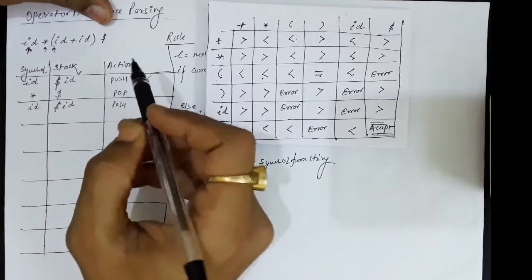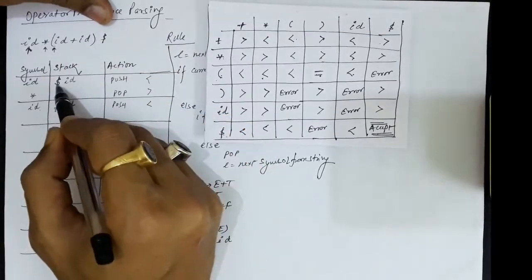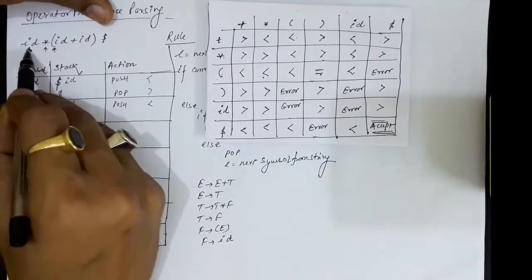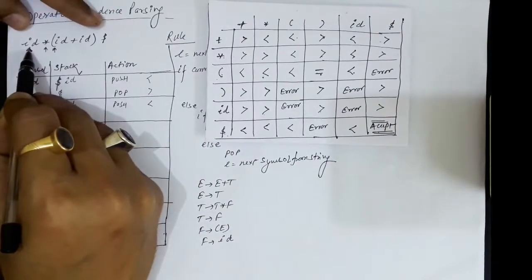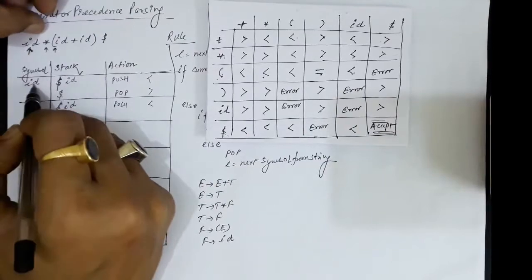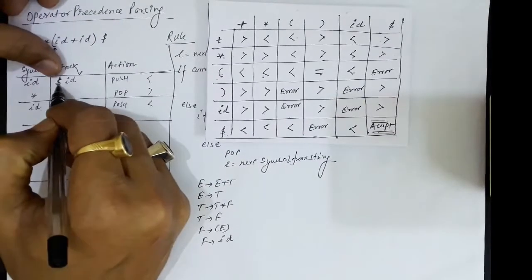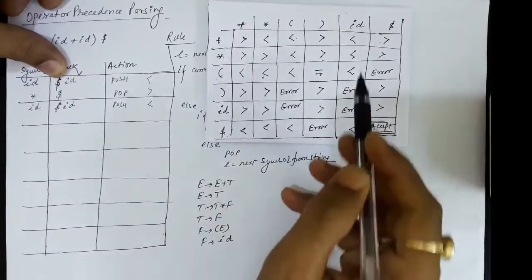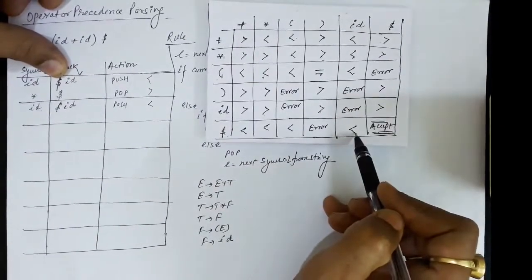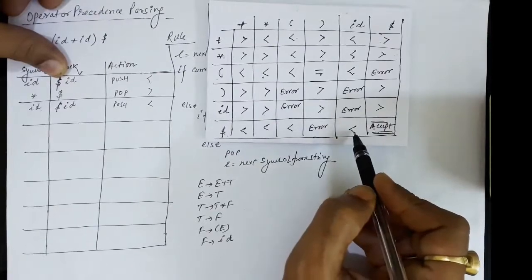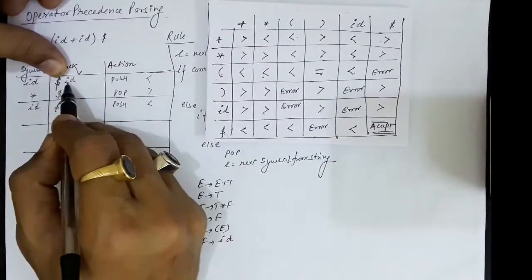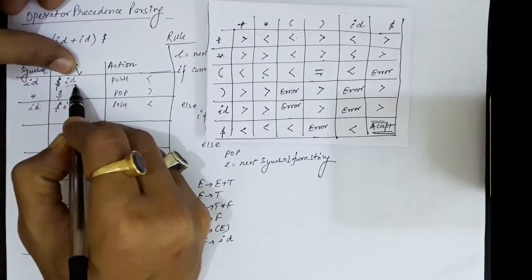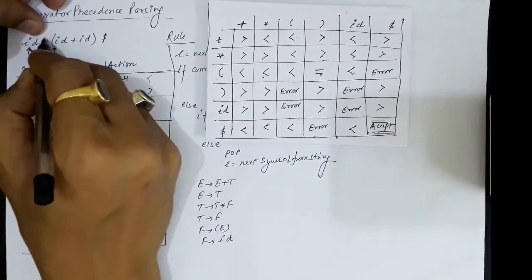Every time we are going to check the precedence of the stack top over the current symbol. Currently we have id in the string, and the stack top is dollar. So we check the precedence of dollar and id — dollar is less than id. If the symbol has lesser precedence, we push that symbol on the stack. So dollar was already there and we have now pushed id on the stack.